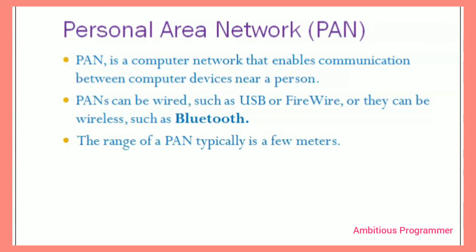The next type is PAN, the Personal Area Network. A personal area network is a computer network that enables communication between computer devices near a person. PANs can be wired, such as USB or FireWire, or they can be wireless, such as Bluetooth. The range of a PAN is typically a few meters. An example is connecting a phone and a PC.